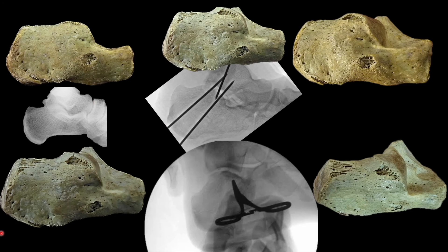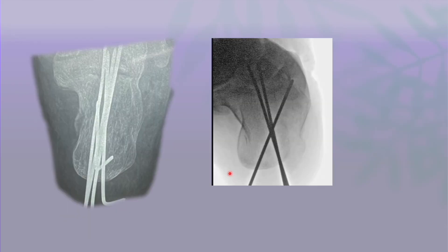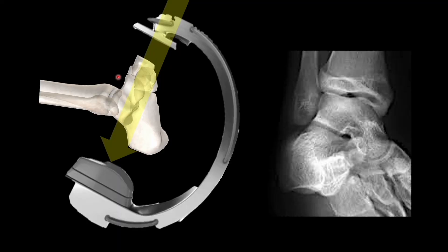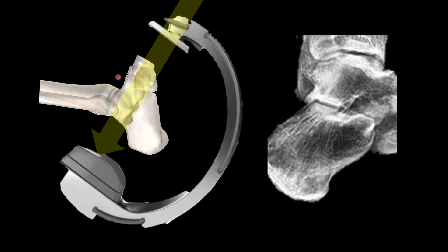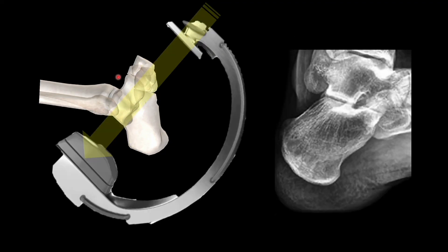At the end I would like to say: whatever view you are getting in the calcaneum, just focus on the posterior facet congruence with the undersurface of the talus. It should always be congruent in any view — in the lateral view, in the axial view, and in the Broden views as well. It should always be parallel to the undersurface of the talus.